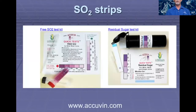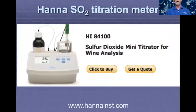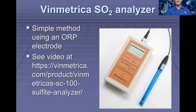Some other methods that could be used are SO2 strips, but they're highly inaccurate and crude. There are titration meters such as the Hanna SO2 titration meter; however, this machine has broken down several times for me within a year or two of use, and I am a little dissatisfied with it — it's about a $700 or $800 piece of equipment. There is also the Vinmetrica SO2 analyzer, common on home winemaking sites, but in our laboratory comparison testing we found it to be relatively inaccurate as well. So I prefer the Ripper method.